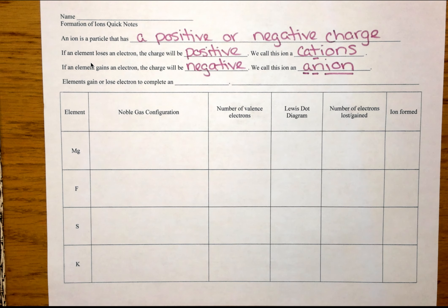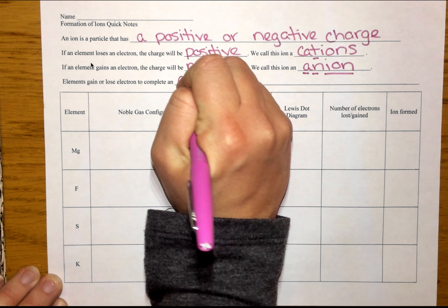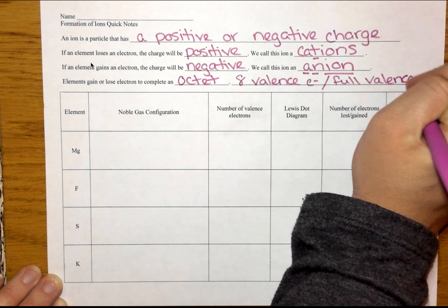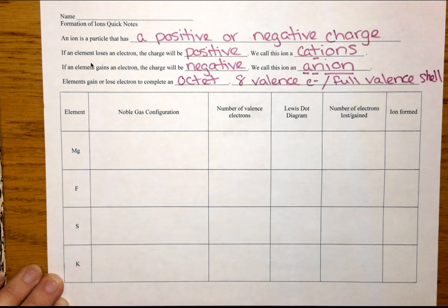So why do we form ions? Why do we just lose and gain electrons? Well, really what they want to do is they want to gain or lose electrons to become like the noble gases. They want to complete what we call an octet. So an octet essentially is a set of eight valence electrons, or a full valence shell.